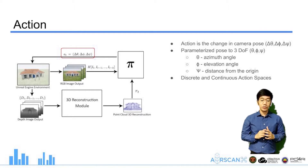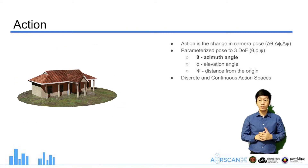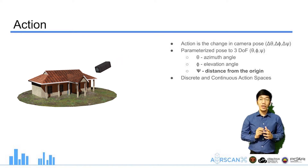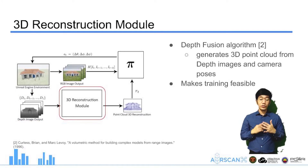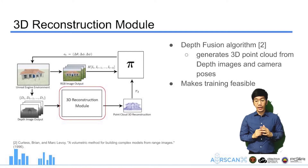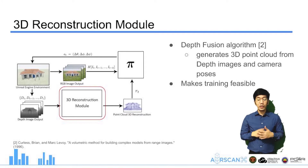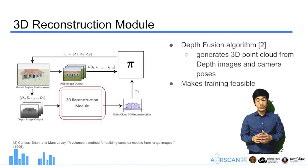The actions the agent can take are changes in the camera pose. We parameterized the camera pose to 3 degrees of freedom: azimuth, elevation, and distance from the origin. We implemented ScanRL for both discrete and continuous action spaces. Depth images are rendered from the Unreal Engine environment at the next viewpoint, and the 3D reconstruction module generates a 3D point cloud from the collected depth images using a depth fusion algorithm. We use depth fusion to make training faster and feasible.